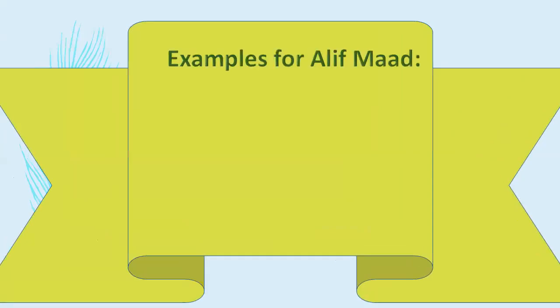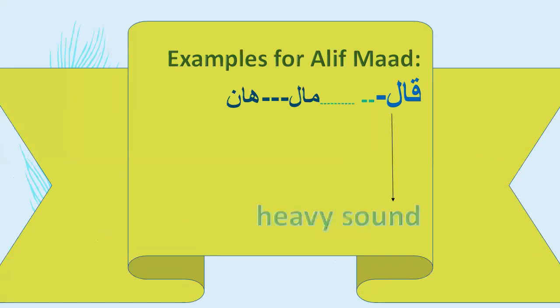Examples for Alif Mad: Alif Mad preceded by Qaf — Qaf is a heavy letter, so Alif Mad is heavy. It is pronounced 'Qa', not 'Ka'. For example, 'Qala' — heavy sound.